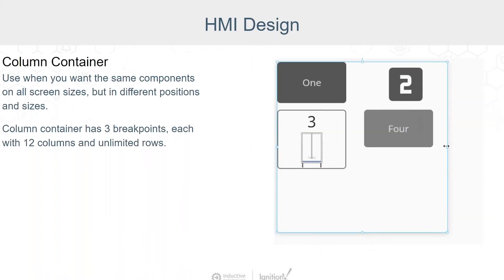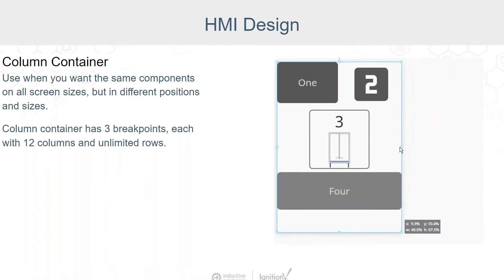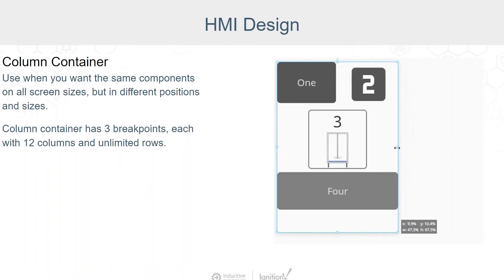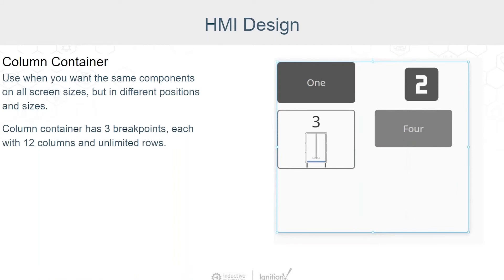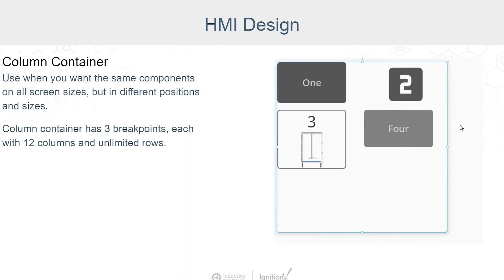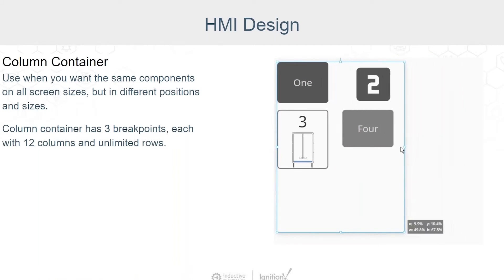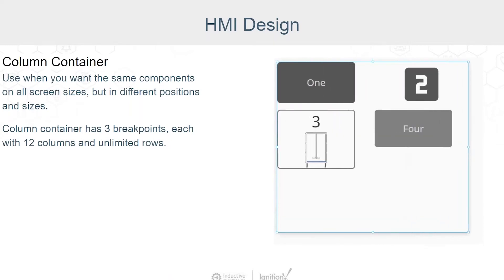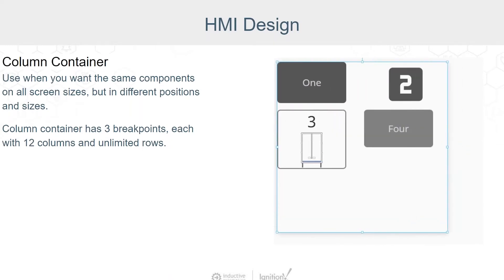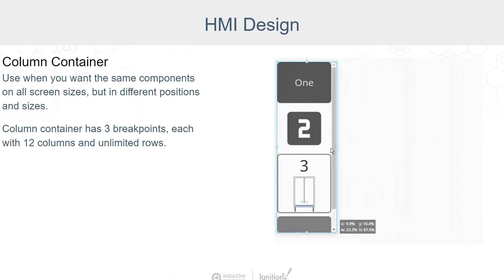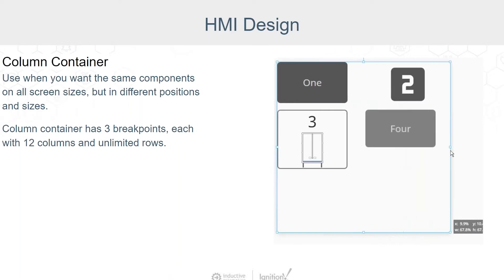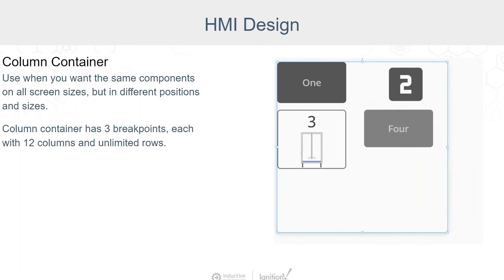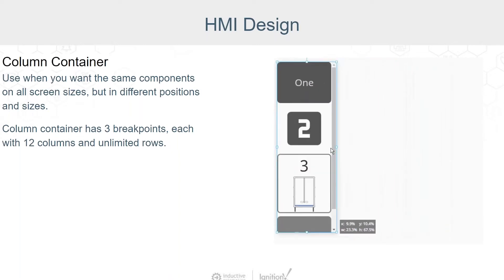What if you want the same components on all of your screen sizes, but you want them in different positions with different sizes? Now it's time for the column container. The column container has three breakpoints: small, medium, and large. Each breakpoint has 12 columns and as many rows as you want. On a smaller screen, each component may take up all 12 columns, but each component may have its own row. On a wider display, the components may share a row.